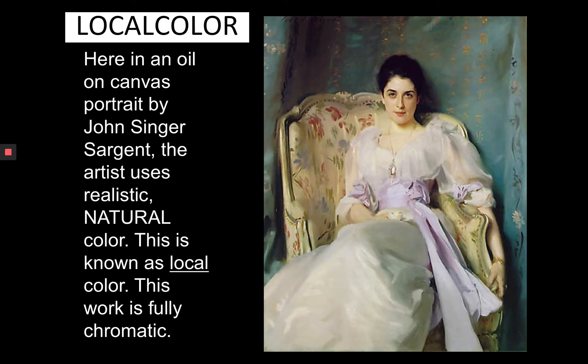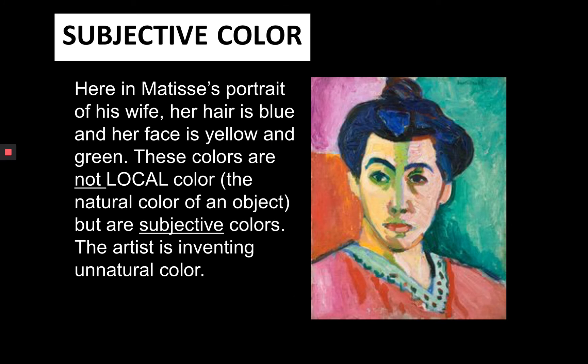Here's an oil on canvas by John Singer Sargent, and this work is fully chromatic and it includes local color. Here is a work by Henri Matisse. This work has been nicknamed 'the green stripe' because down the middle of her face there is a green stripe, and her hair is purple. Some of her features are not local color, such as the yellow on one side of her face. So here we are using subjective colors — the artist is inventing through the use of unnatural color.